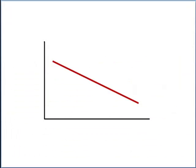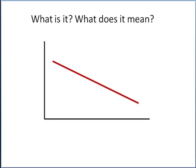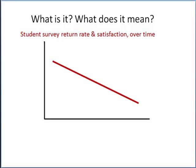While gathered around a table one day, the senior leaders of the Command and General Staff College took a look at the following chart, and we saw the red line. It's fair to ask, what is it and what does it mean? It turns out that this is the student survey return rate and measured satisfaction rate over time across the atypical calendar and academic year. Students, as the year progresses, returned a lower percentage of surveys, and their measured satisfaction declines as the year goes on.